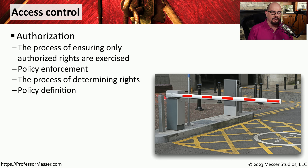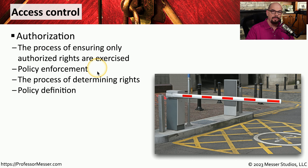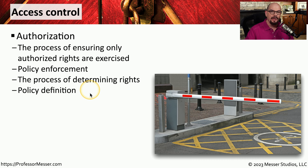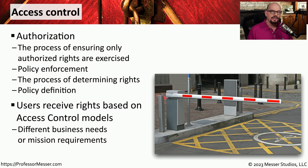Once someone authenticates to a network, we still need to provide them with access to the resources they need to perform their job function. We refer to this as access control, and it's a process of enforcing the policies that would allow or disallow someone access to data. This access control can be associated with an individual or a group of individuals. There are very broad access control models, and we'll look at those models in this video.